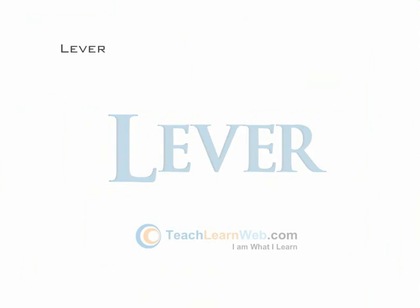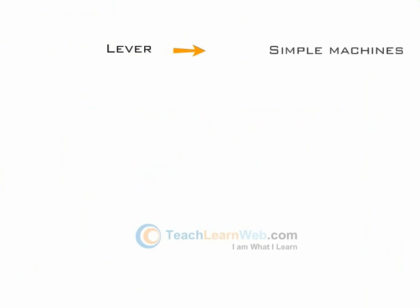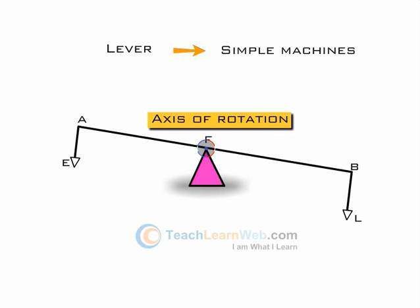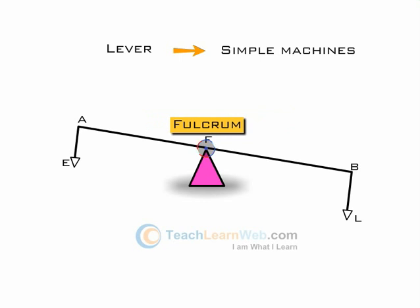Lever is a simple machine. A lever is a rigid bar which can rotate about a fixed point called the axis of rotation. This axis of rotation is called the fulcrum.